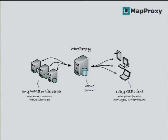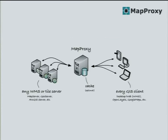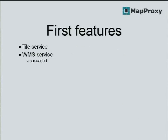This is how the first version of MapProxy looked as a schema. On one side we have clients that communicate with MapProxy, and MapProxy itself communicates with other WMS servers or tile servers. The first features included tile requests — clients make requests to MapProxy, MapProxy delivers tiles, and when tiles are missing, MapProxy requests the source service to fill the cache. We also supported WMS cascaded requests, where MapProxy forwarded the request for the same bounding box and projection to the source and returned that image.